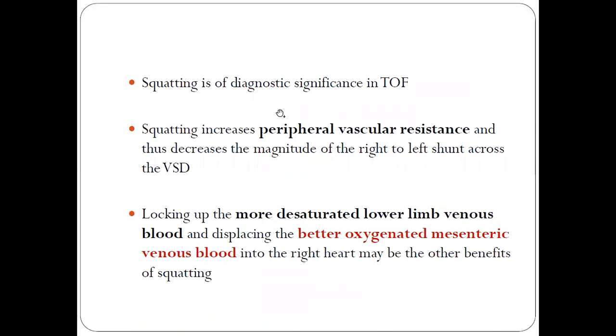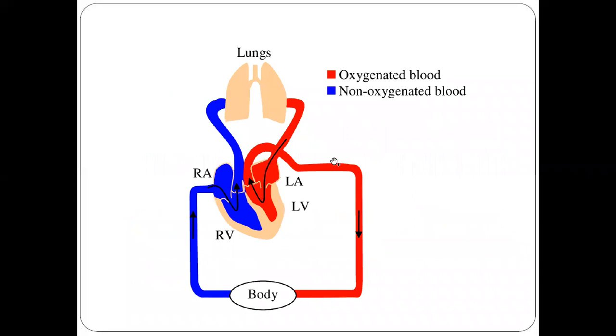Squatting is of diagnostic significance in TOF. What squatting actually does is whenever any baby or child takes a squatting position, this squatting leads to increased peripheral vascular resistance. Normally, the left ventricle has to pump blood into the aorta. When the left ventricle pumps blood to the aorta, there is some resistance called peripheral vascular resistance. If you do more squatting, this peripheral vascular resistance increases more and more.